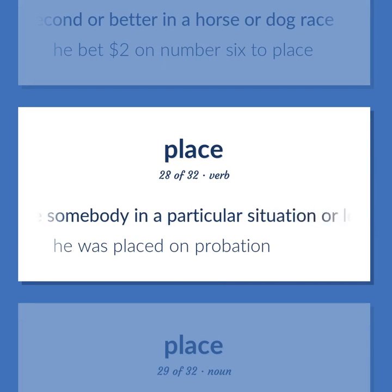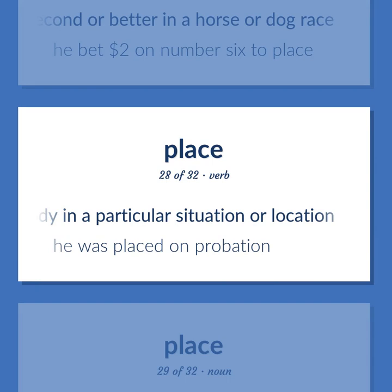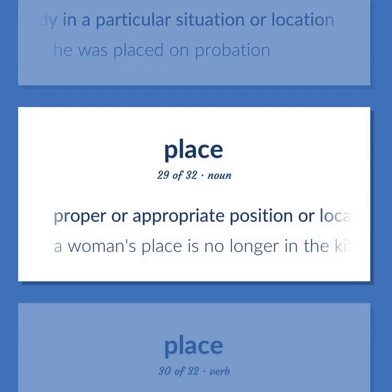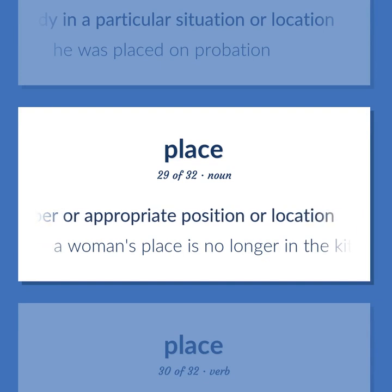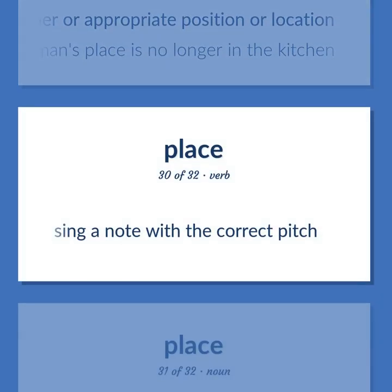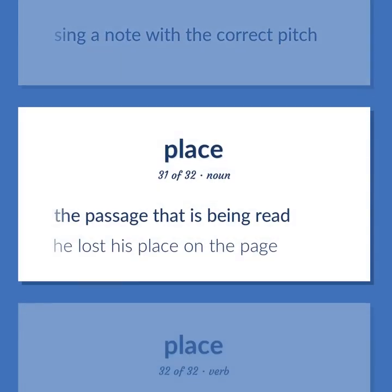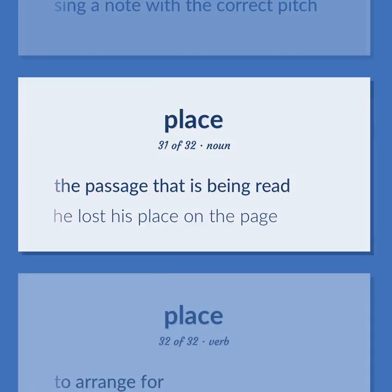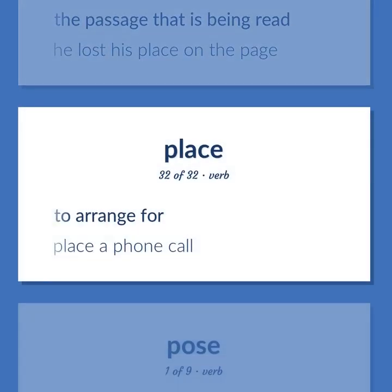Place somebody in a particular situation or location. Example: He was placed on probation. Proper or appropriate position or location. Example: A woman's place is no longer in the kitchen. Sing a note with the correct pitch. The passage that is being read. Example: He lost his place on the page. To arrange for. Example: Place a phone call.